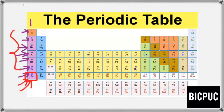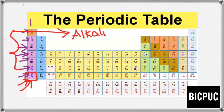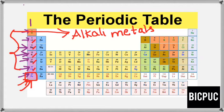Group 1 of the s-block elements are referred to as alkali metals. All of them from hydrogen to cesium are called alkali metals. The reason is simple — they form strong alkalis. Elements like lithium, sodium, potassium, rubidium, and cesium form strong hydroxides when treated with water. Therefore, they are called alkali metals.